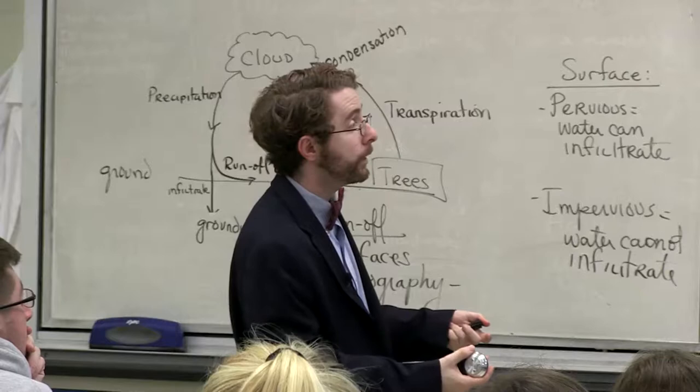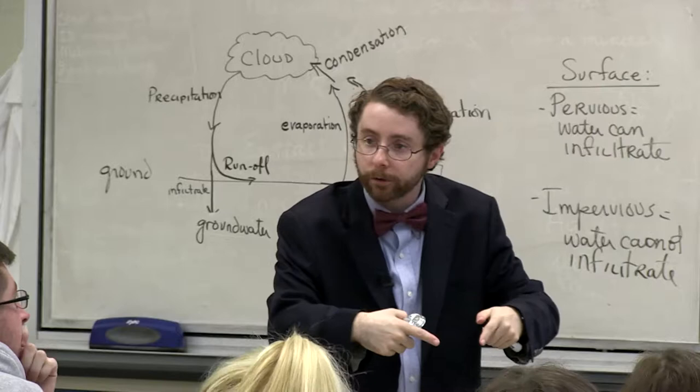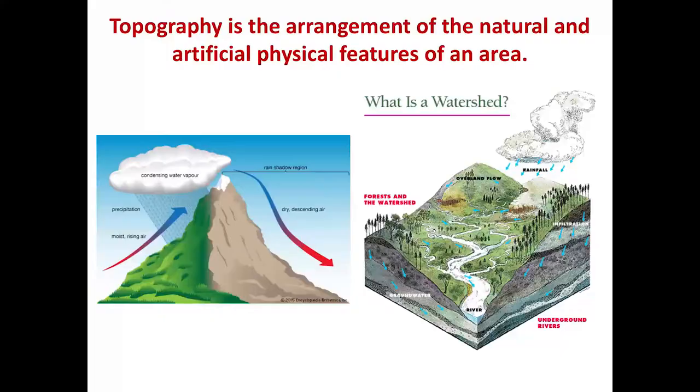Topography is obviously going to affect my watershed, because depending upon how the land is formed, that's going to control where the water goes. You're going to see the role of topography in affecting watersheds and therefore runoff.